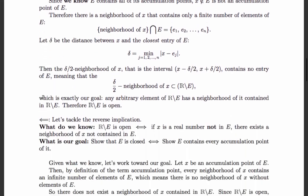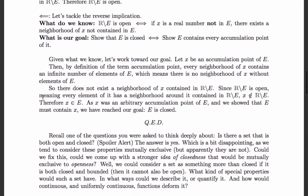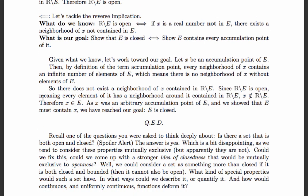Now let's tackle the reverse implication. We know the complement is open — in other words, if X is a real number not in E, then there's a neighborhood of X not contained in E. Our goal is to show E is closed; that is, show E contains every accumulation point of it.